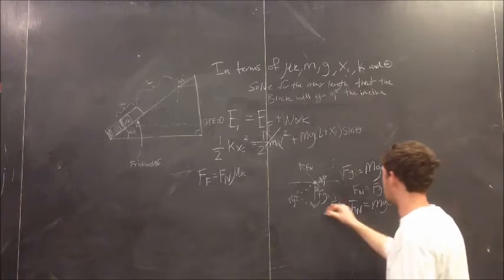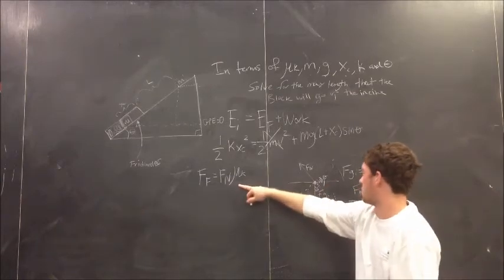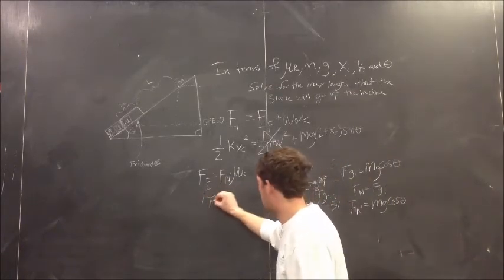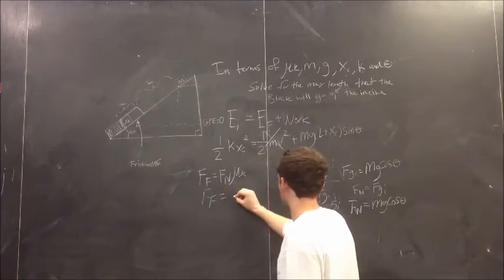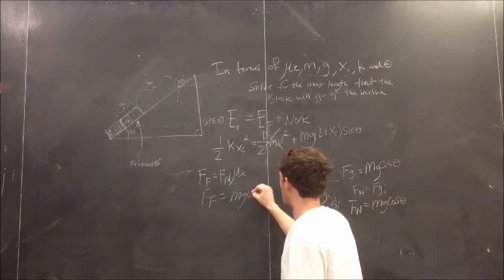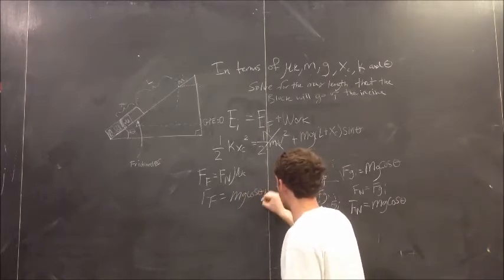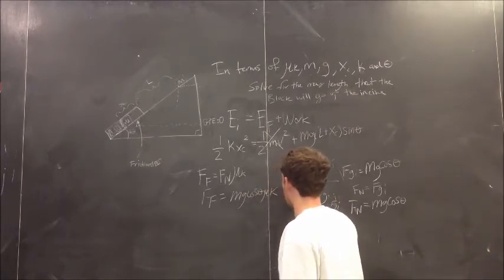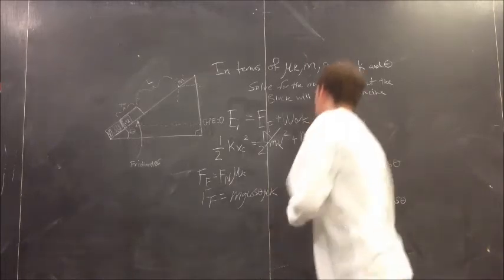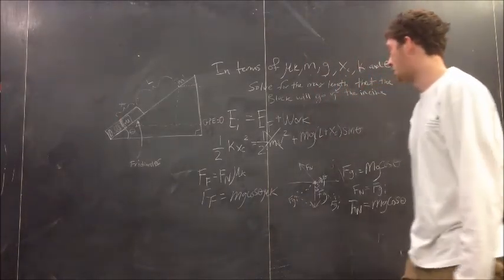And since ff equals fn μk, we now know that mg cosine theta μk is equal to the force of friction.